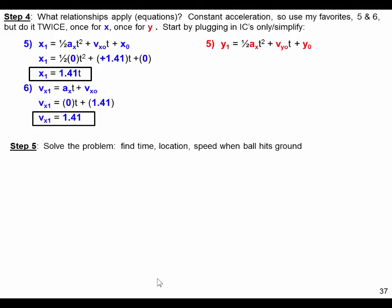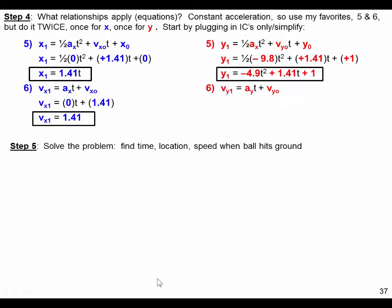Same thing in the y-direction. We'll plug in our initial values for our initial acceleration, our velocity, and our position. Plug those in. Simplify a bit, and there's our position as a function of time. Similarly, for the y-direction, for the velocity in the y-direction, we can come up with a velocity in the y-direction equation.